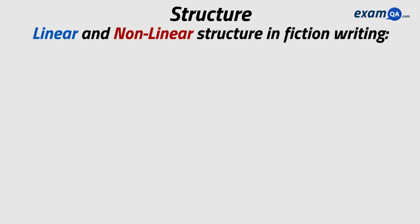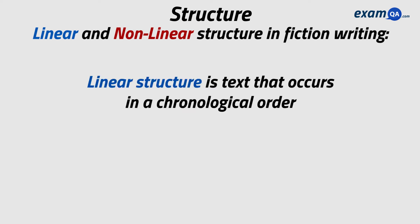Linear and non-linear structure in fiction writing. Linear structure refers to texts that are structured in a chronological order. These kinds of texts will have a tendency to build up towards a climax.